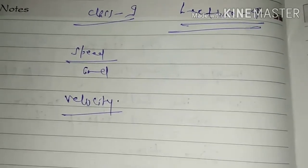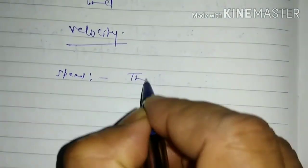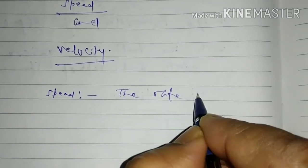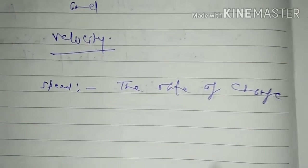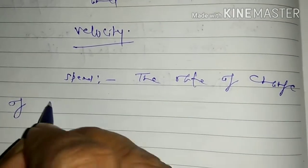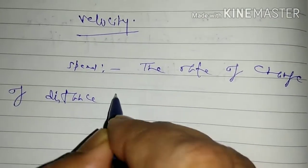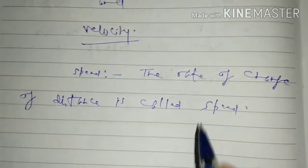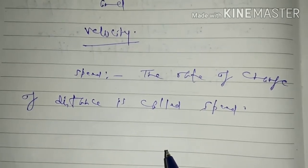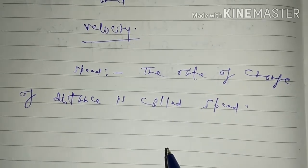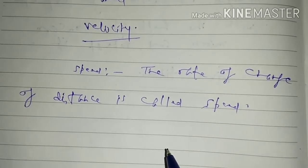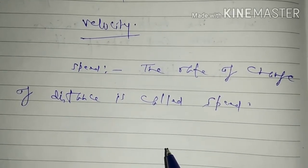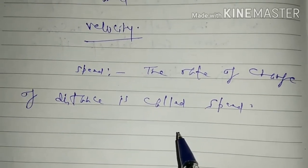Today we shall try to learn speed and velocity. What do we mean by speed? The rate of change of distance is called speed. You can also say that the distance travelled per unit time is called speed. You can define any physical quantity in different ways, but our understanding should be clear.